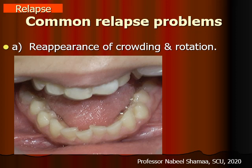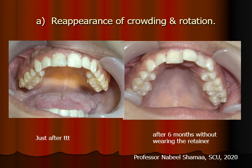Common relapse problems: here you can see reappearance of crowding and rotation in the area of the lower anterior incisors and in the premolar area. Also here you can see the upper right central incisor just after treatment — after six months there is a little bit of relapse. This patient did not wear the retainer properly; this photo was taken six months after the final position was attained.